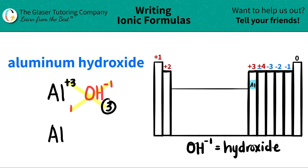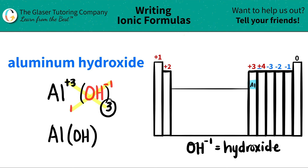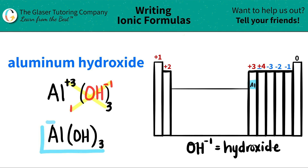But now here's the thing — I have multiple polyatomics. In this case, I have three hydroxides. When you have more than one polyatomic, you need to show parentheses. So what I'm going to do is put parentheses, OH, close the parentheses, and then say that I have three. This now says that I have three of the whole polyatomic, and now I am done. So aluminum hydroxide is just Al(OH)₃.